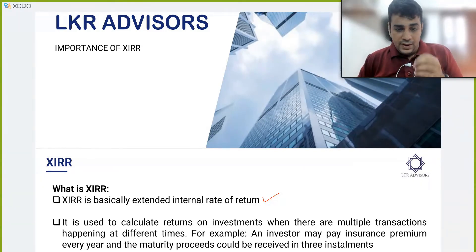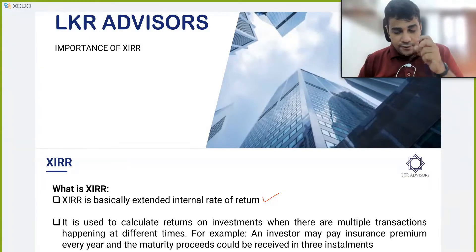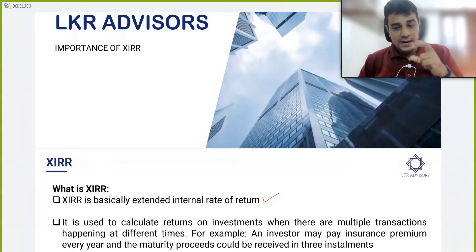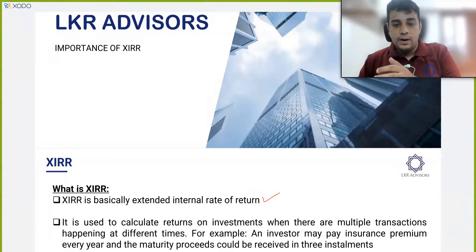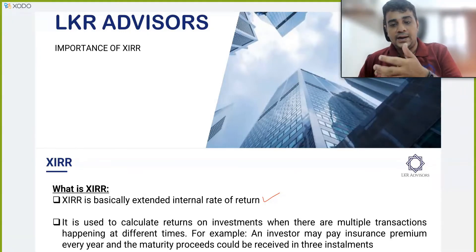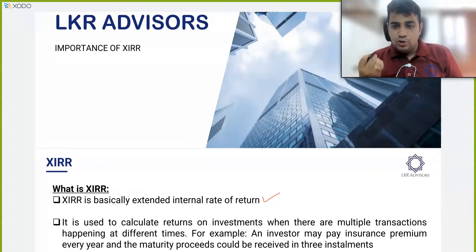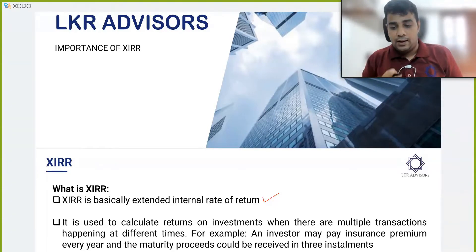When you are planning to enter into such a transaction, the first thing you should always do is calculate what return is arising out of the investment. Your financial advisor may tell you to pay 10,000 for 10 years and at the end of 15, 20, or 25 years you will get back an amount. The amount may look huge and you may feel you are getting a very high return, but it is always good to calculate XIRR.